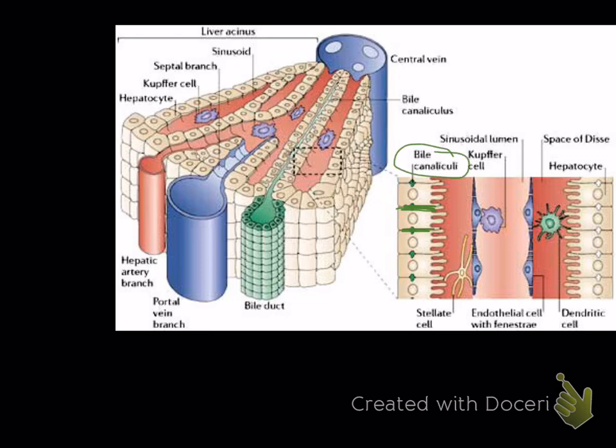Those feed into larger bile canaliculi here. It goes in between the hepatocytes. There's a little area for it to get dumped into. Then it goes into these larger bile canaliculi. It goes the opposite way, and it empties into the bile duct. Then that becomes larger bile ductules. Eventually, it goes into our common bile duct, which then goes into our intestine.